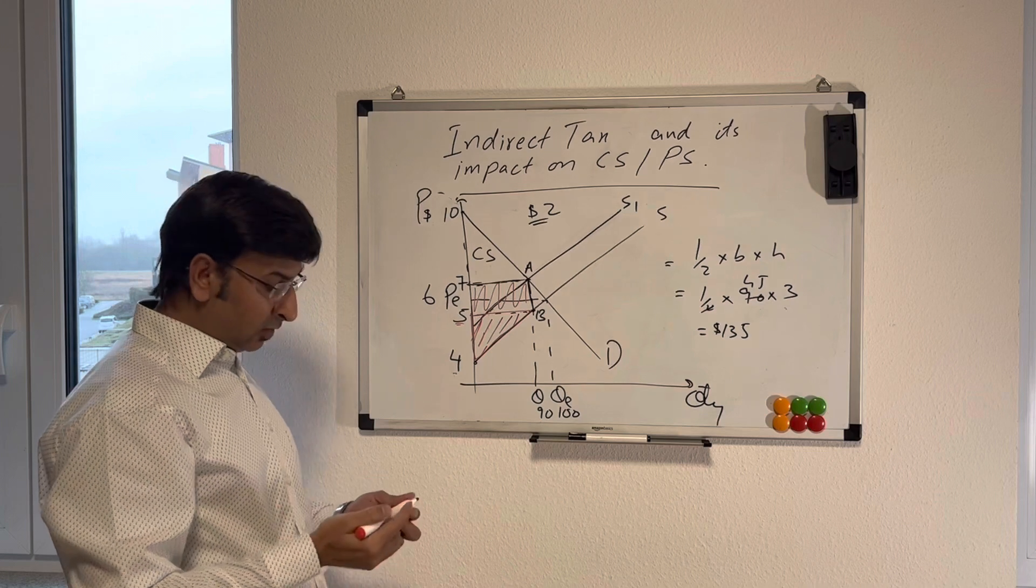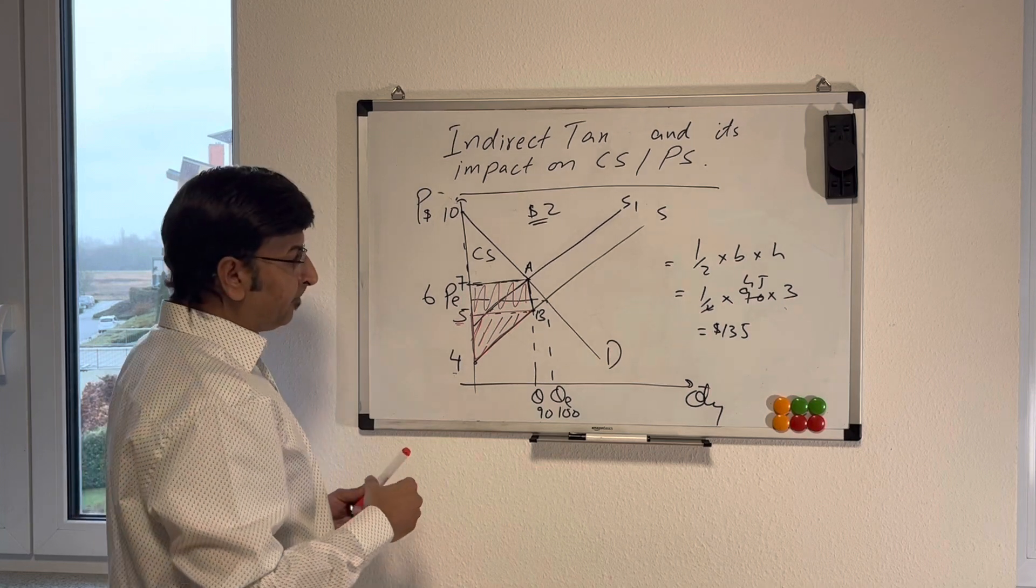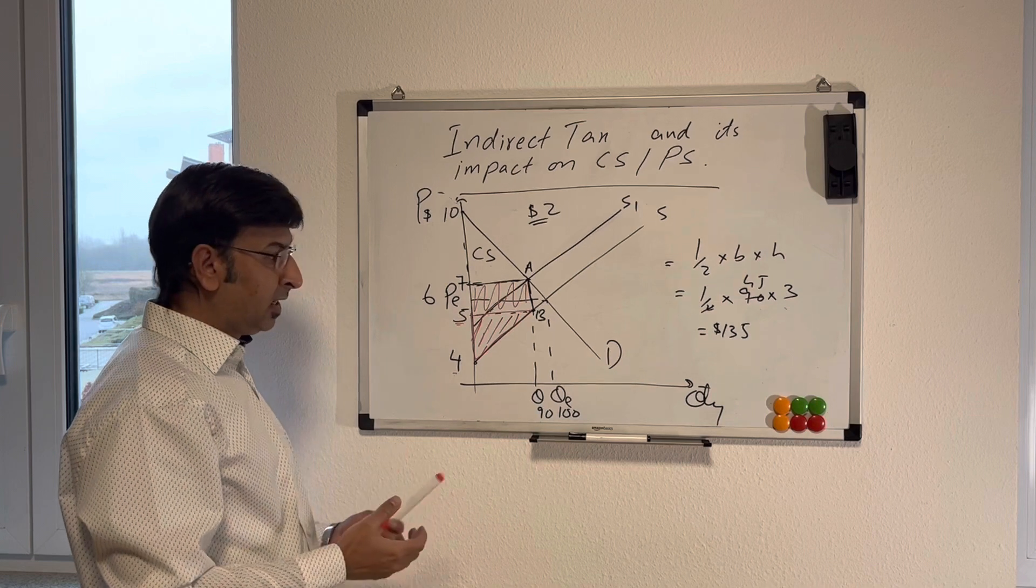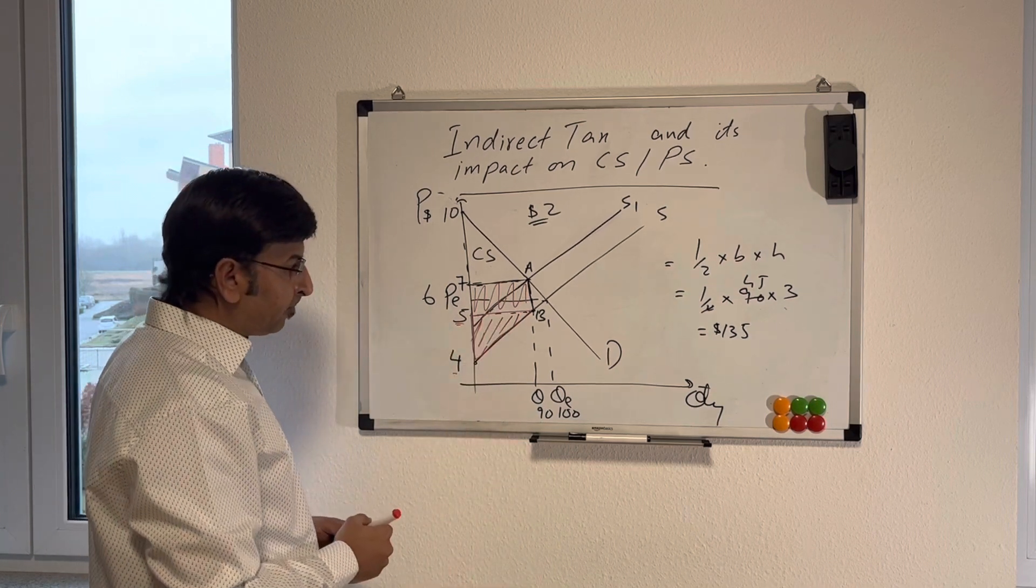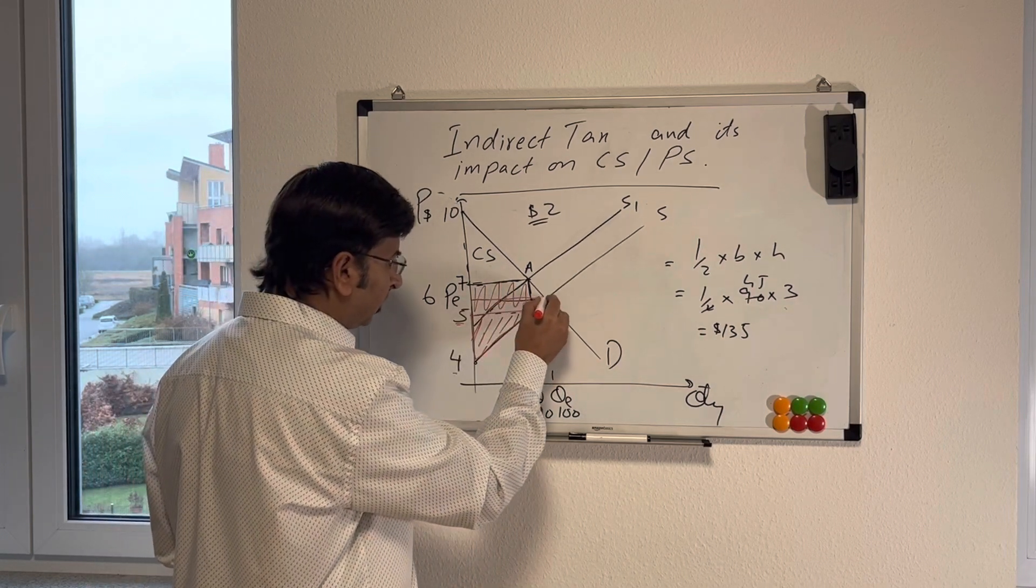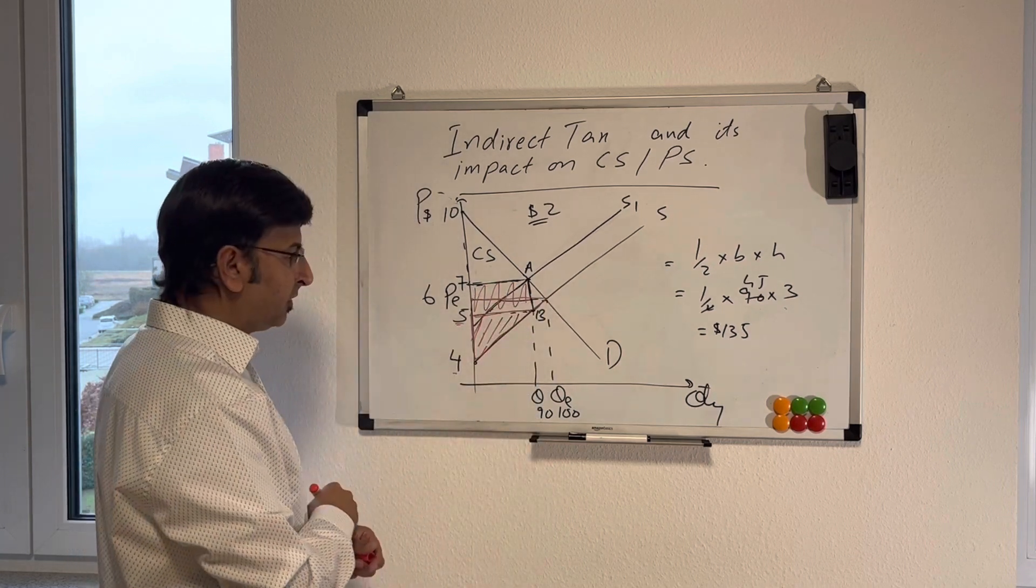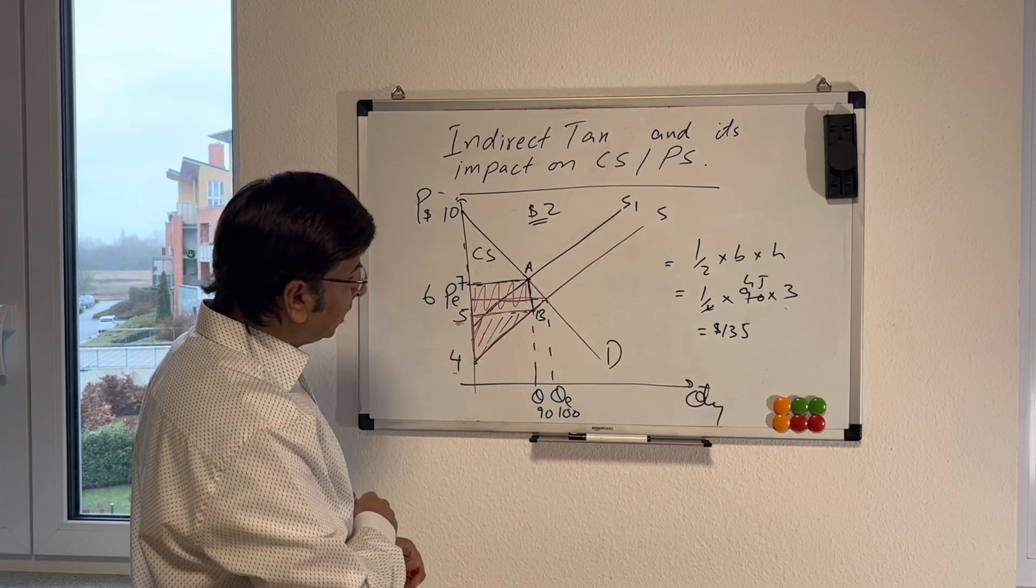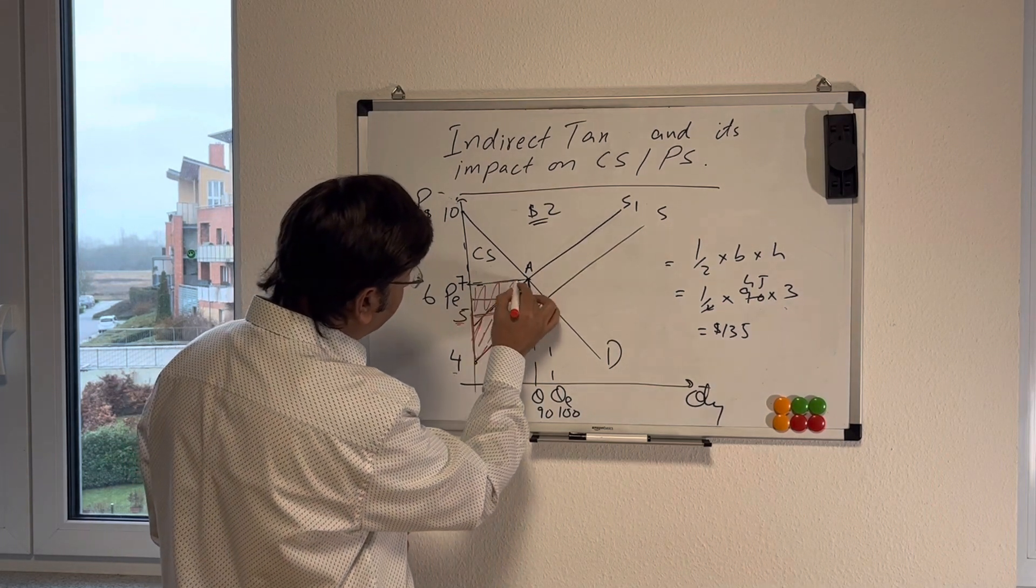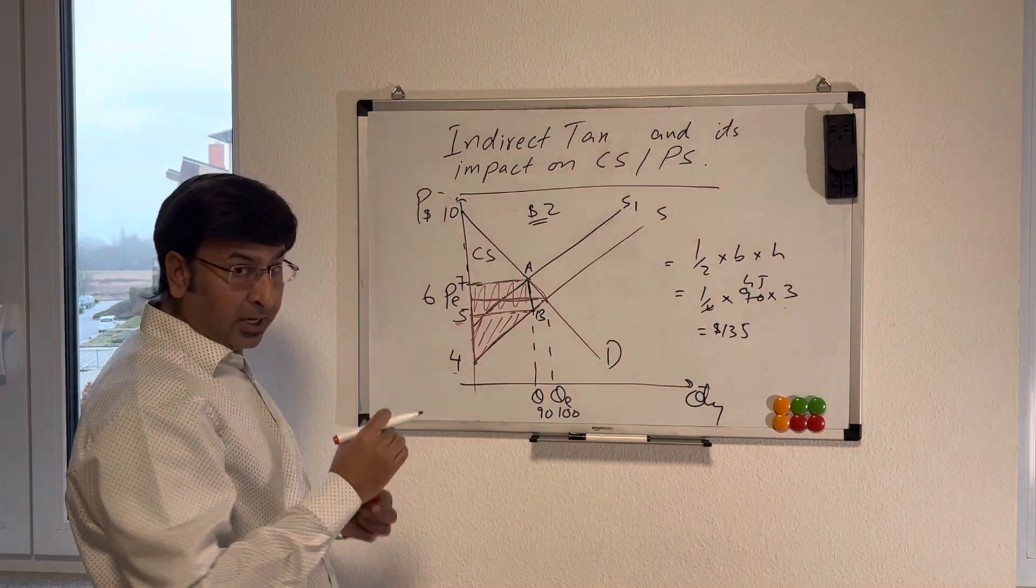In order to actually find the change in consumer and producer surplus, you should use different colors because it's not easy for you to understand. And I also have limited colors here. So you need to find the change in producer surplus, which is going to be this whole area, which is the trapezium. And you know how to find the area for trapezium. In terms of consumer surplus, the area is going to be this one.